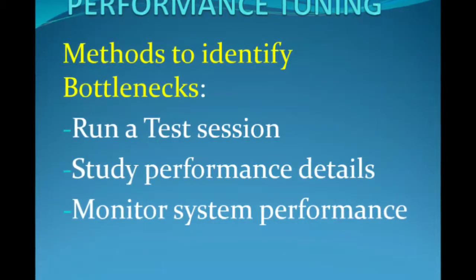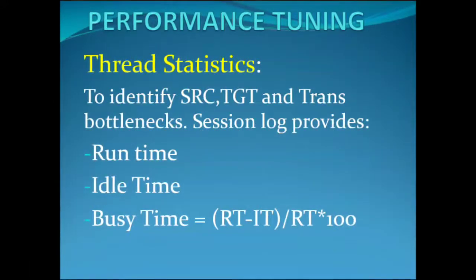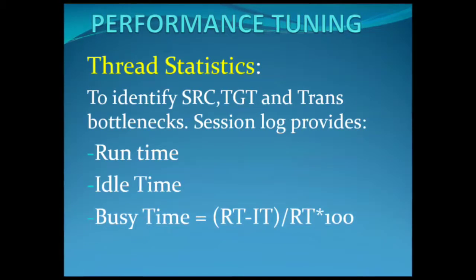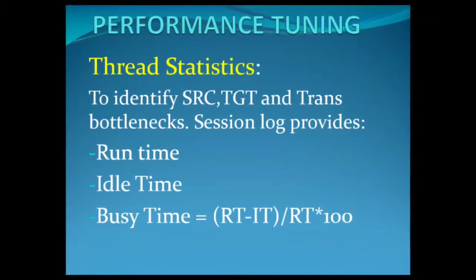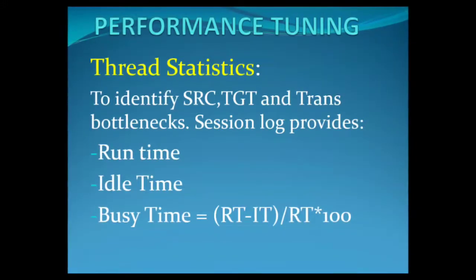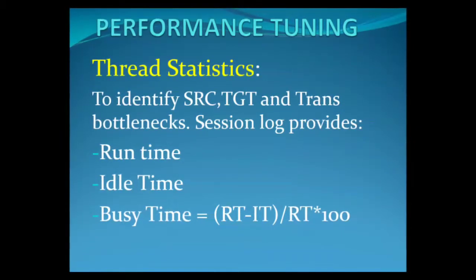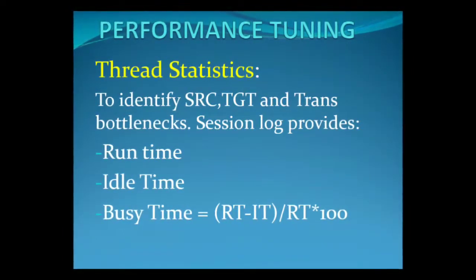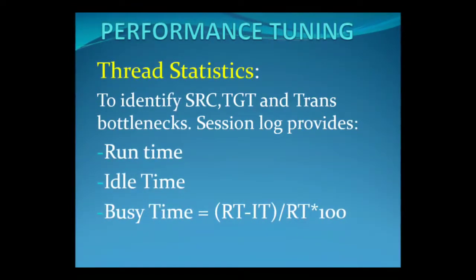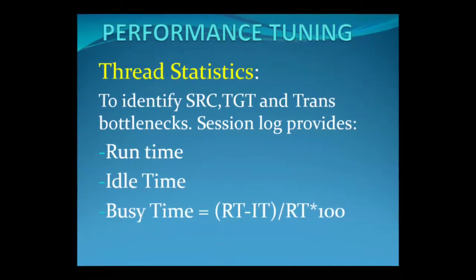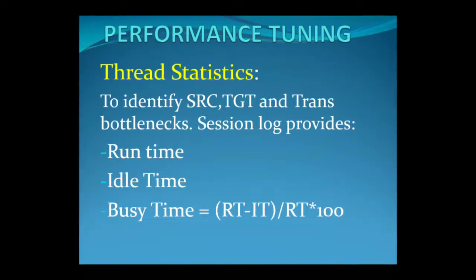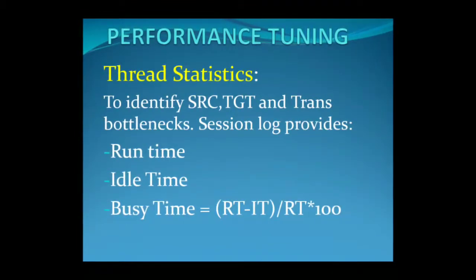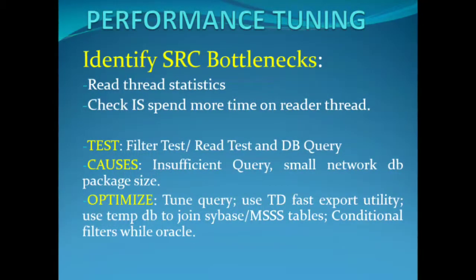Thread statistics are vital to identify source, target, or transformation bottlenecks. The session log provides all these details. First is runtime — the amount of time a thread was running. Ideal time is the amount of time a thread is idle. Busy time is the percentile of runtime the thread is not idle. The formula for busy time is: (runtime minus ideal time) divided by runtime, multiplied by 100. An interviewer may ask about thread statistics.